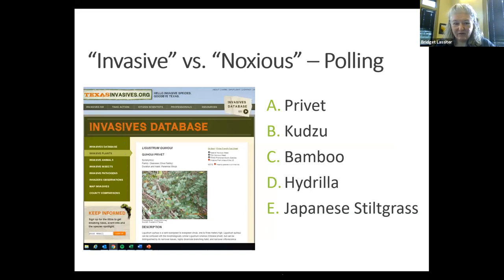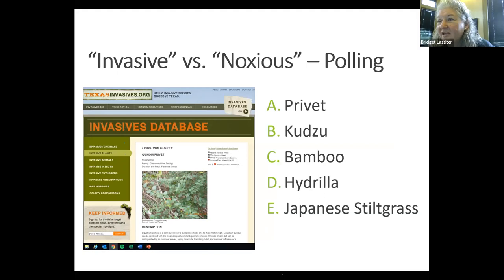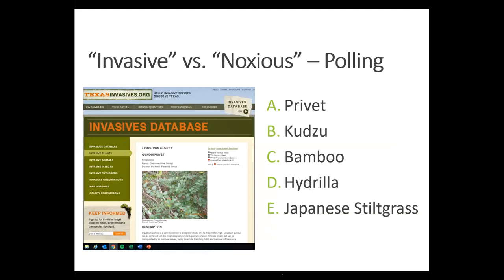Any questions before we move on? Somebody just asked to spell that weed. It is on screen — it's spelled U-I-H-O-U-I privet. It's in the olive family, a perennial shrub, very similar to Chinese privet, but according to Texasinvasives.org it has more narrow leaves than Chinese privet and is much more branched. That picture looks a lot like Chinese privet — so potentially a lot of what we've seen and just assumed was Chinese privet could be this species.